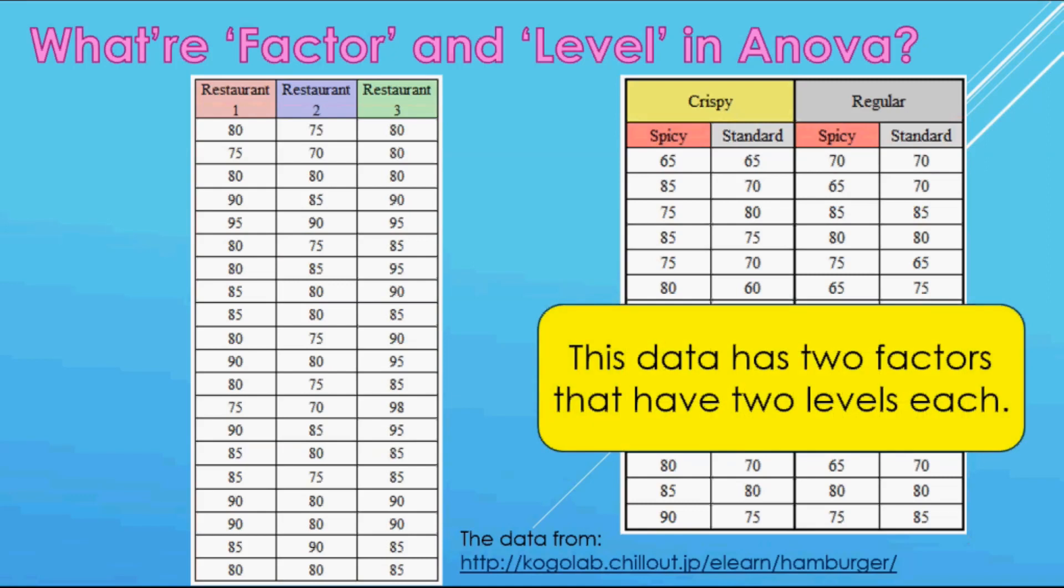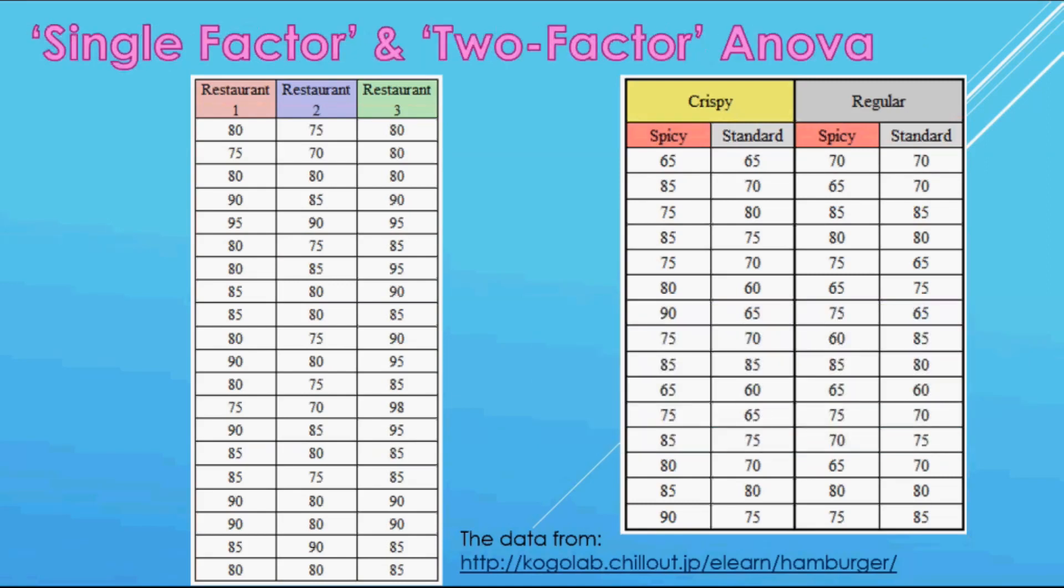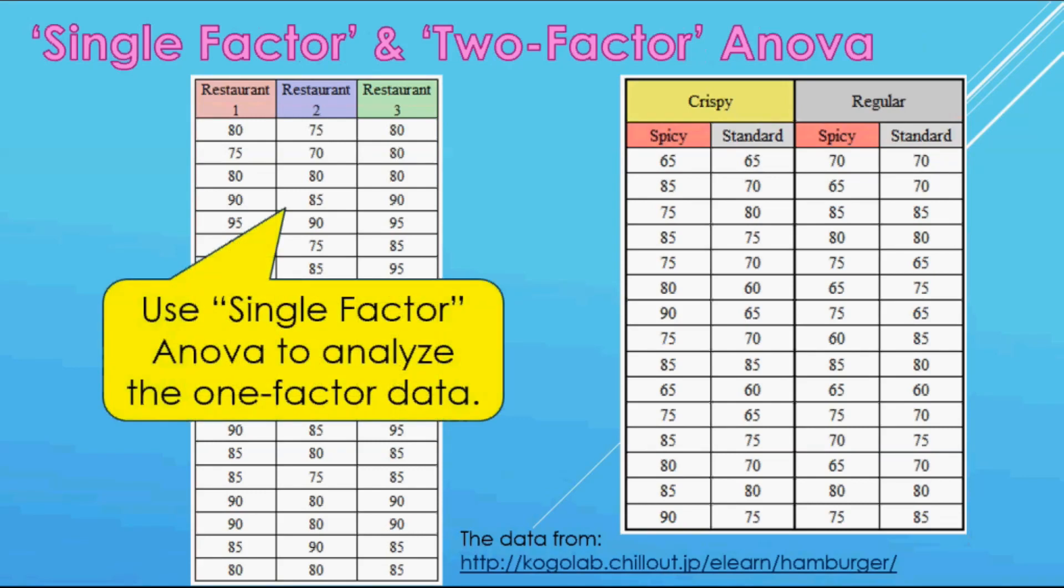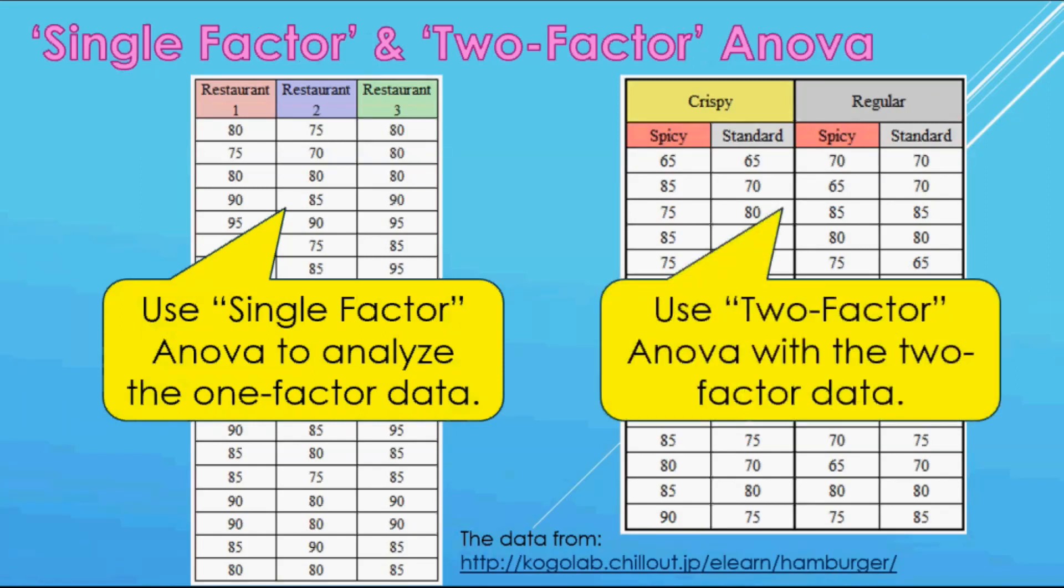In other words, this data has two factors that have two levels each. You would use single factor ANOVA to analyze the one factor data on the left, and use two factor ANOVA with the two factor data on the right.